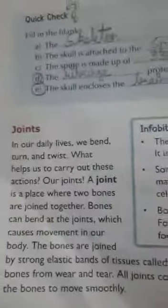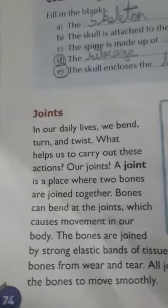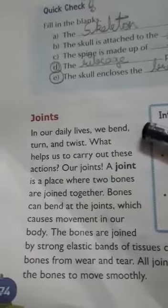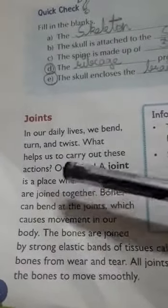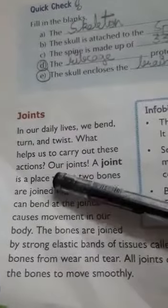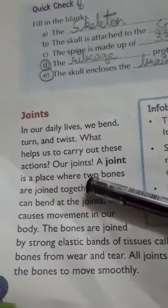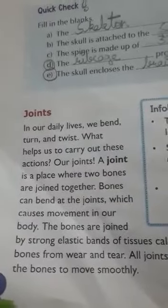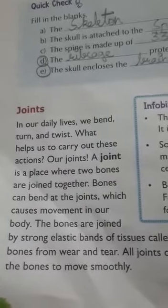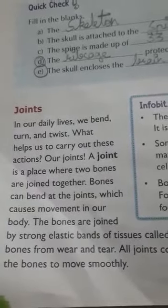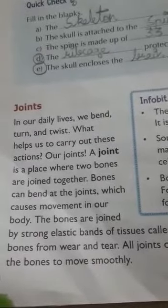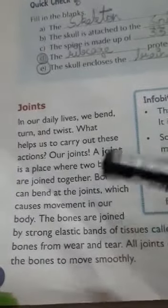Now let's see what joints are. We have just seen different types of joints in the skeletal system. In our daily lives we bend, turn, and twist our body — what helps us carry out these actions? Our joints. The skeletal system helps us stand upright and move, and gives shape and support to our body. But our bones cannot move if joints are not there.